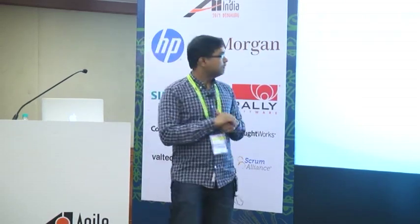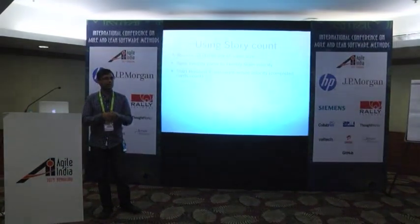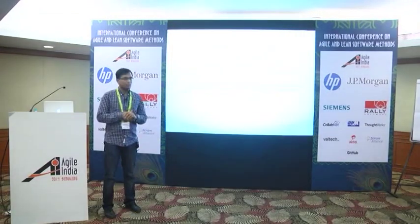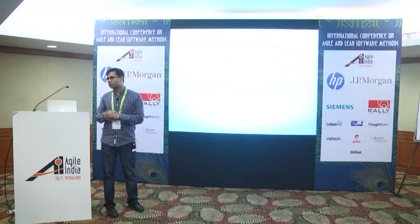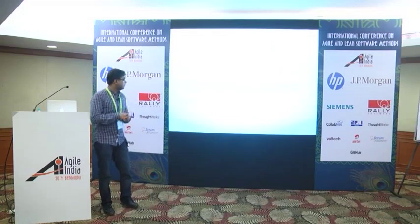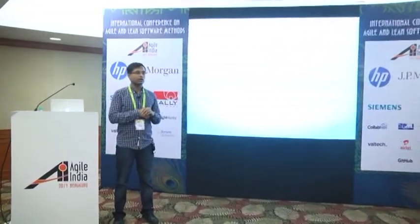We used that information and started iteration one. At the end of iteration one, we verified whether what we said in the velocity game was correct. For example, if we said we'd complete around nine cards in a one-week iteration, and at the end of week one we came in at eight to nine, we went ahead with eight story count per iteration. Using this formula, we calculated how many iterations it would take to complete the entire product backlog. We re-looked at the velocity after the second and third iterations and adjusted accordingly — similar to what you'd do with story points on any agile project.